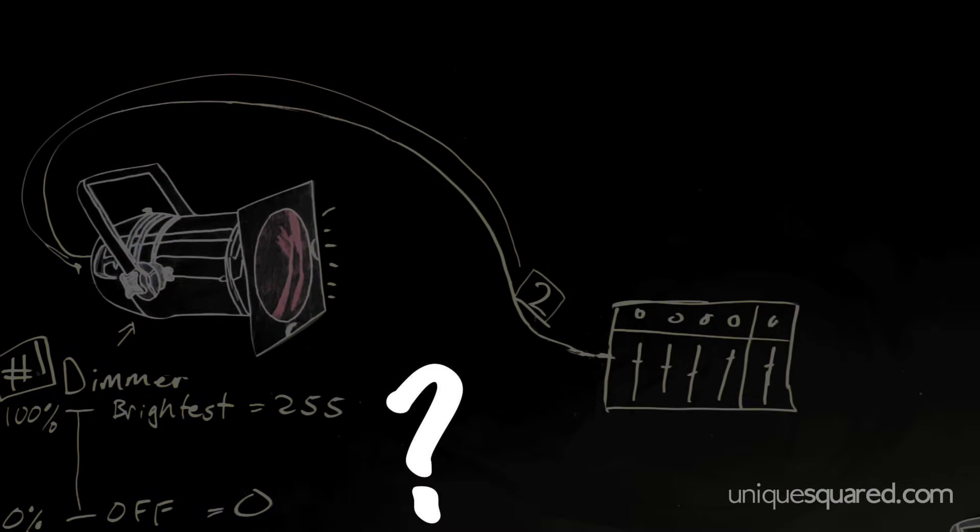This light interprets the number 255 as full intensity and the number 0 as off. In part 5 of this series, I'll talk about how this control by numbers is useful, but let's keep going with our example.